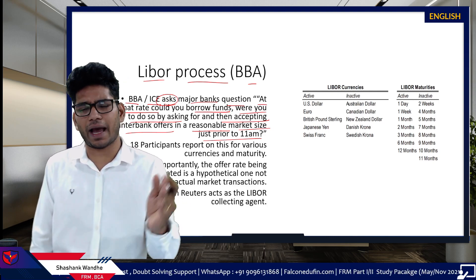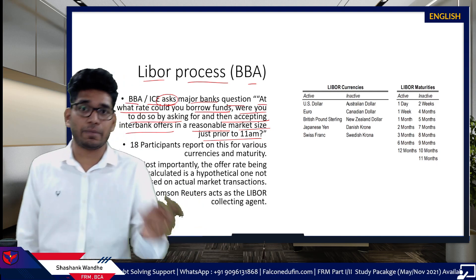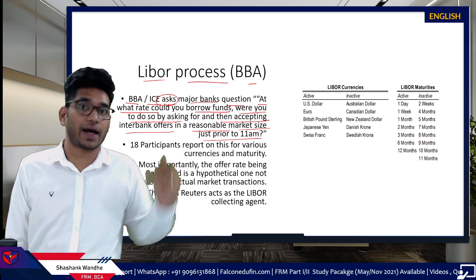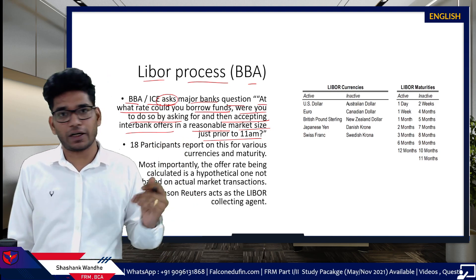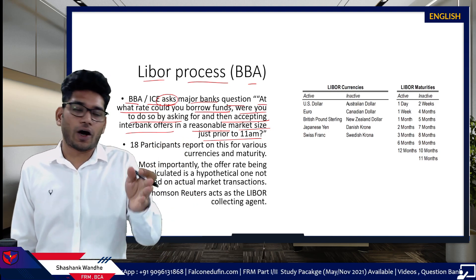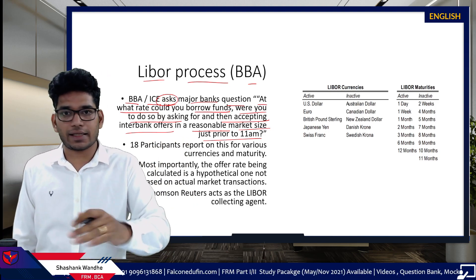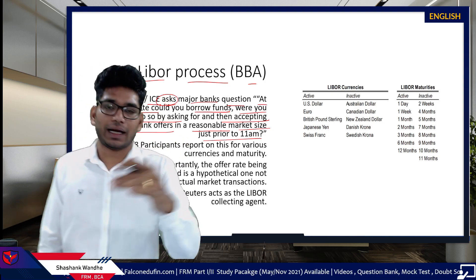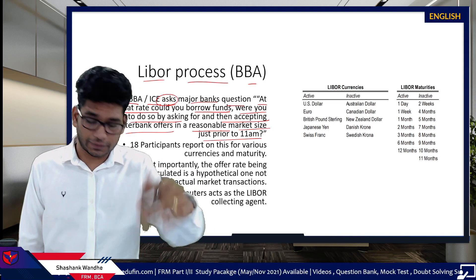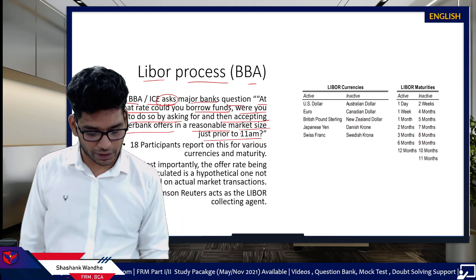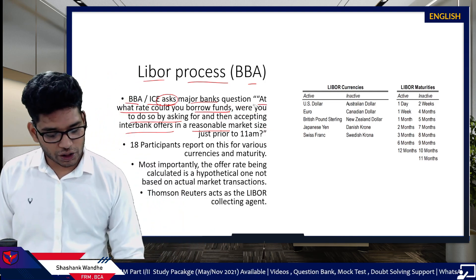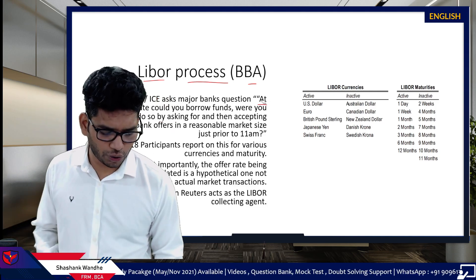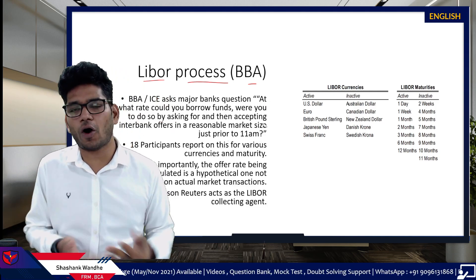There were 16 banks for most currencies and 18 banks for the dollar LIBOR. LIBOR was quoted based on different currencies. All these banks were supposed to reply to the question: at what rate are they able to borrow or want to borrow.